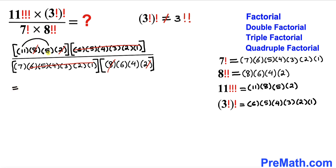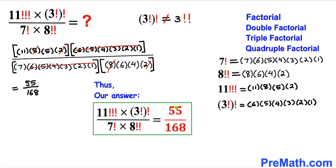Multiplying out: 11 times 5 gives 55 in the numerator, and 7 times 6 times 4 gives 168 in the denominator. So the final answer to this question is 55 divided by 168.